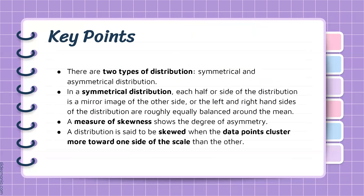The key points that we have to remember: there are two types of distribution — symmetrical and asymmetrical. In a symmetrical distribution, each half or side of the distribution is a mirror image of the other side. On the other hand, a measure of skewness shows the degree of asymmetry, and we can say that a distribution is skewed when the data points or values cluster more toward one side of the scale than the other.